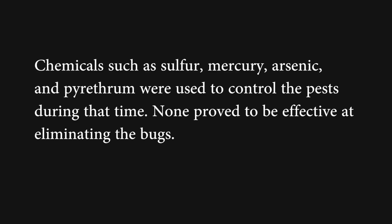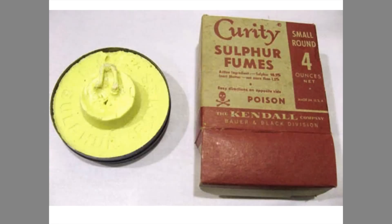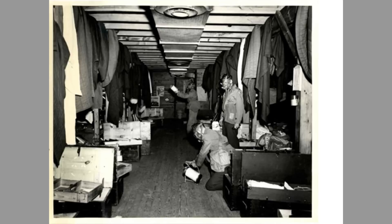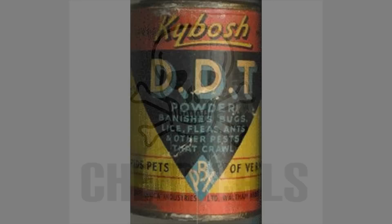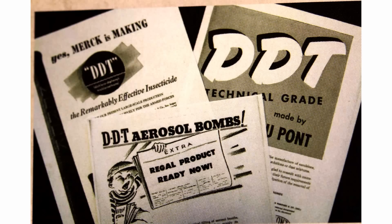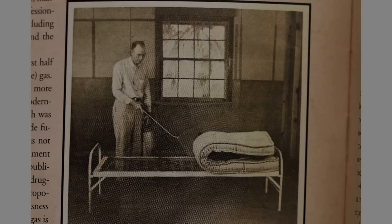None of the methods proved to be effective at eliminating the bugs. Fumigation of infested structures using sulfur and later hydrogen cyanide gases proved to be more effective compared to previously used insecticides. Despite their effectiveness in killing the insects, these products carried considerable health risks for those using them and for those in proximity. In the 1940s, DDT became available as a much safer and more effective product and was able to eliminate bedbugs in a room by thoroughly treating only the bed.